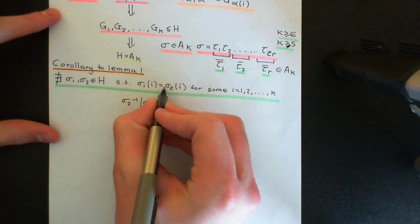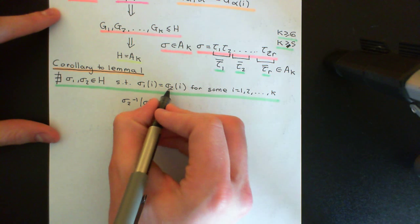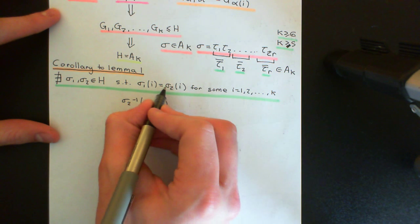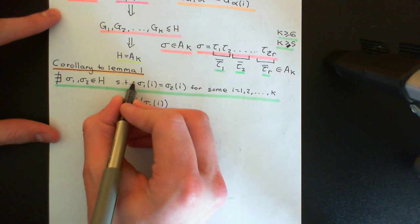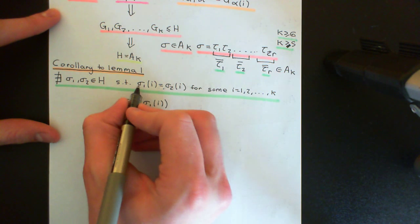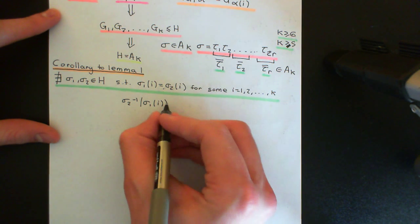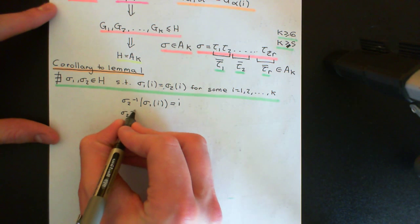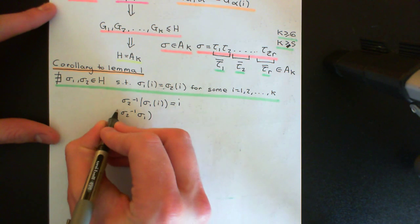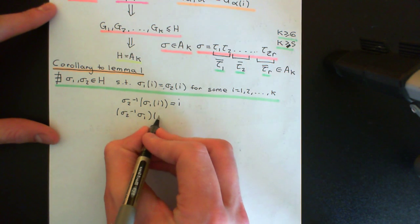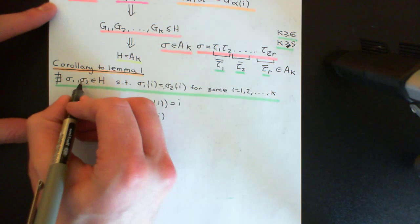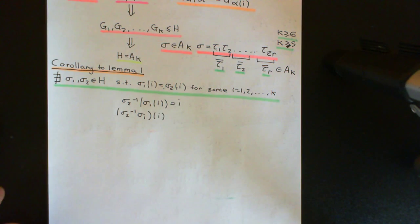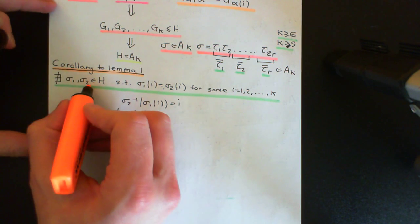If sigma_2 maps i onto the same thing as sigma_1, then sigma_2 inverse will invert it. So if sigma_1(i) = sigma_2(i), we can apply sigma_2 inverse to both sides: it cancels on the right giving i, and on the left gives sigma_2^{-1} ∘ sigma_1 acting on i. This equals i. And since H is a subgroup, sigma_2 inverse is in H if sigma_2 is in H, and the composite sigma_2^{-1} ∘ sigma_1 will also be in H.